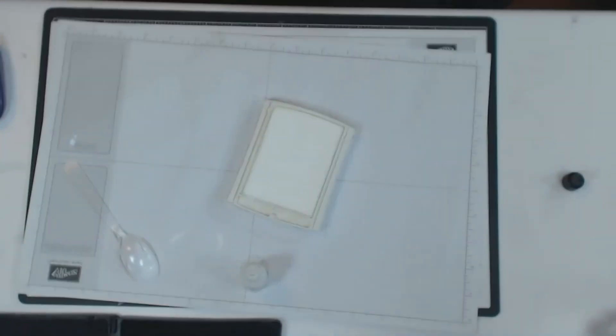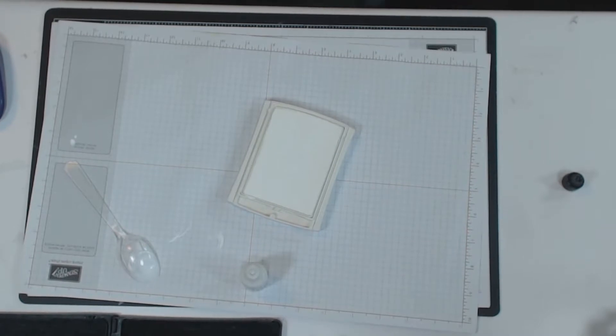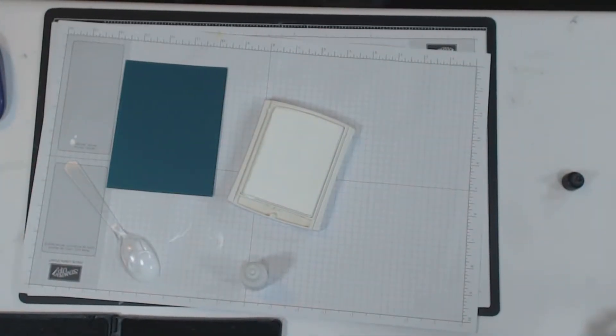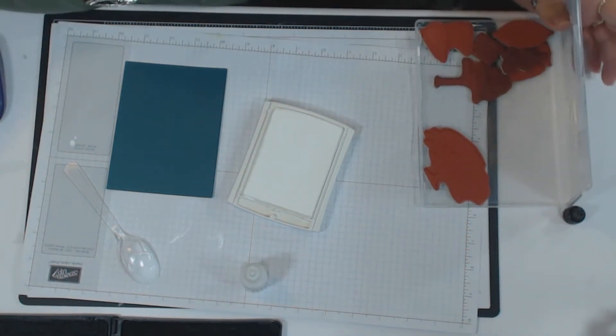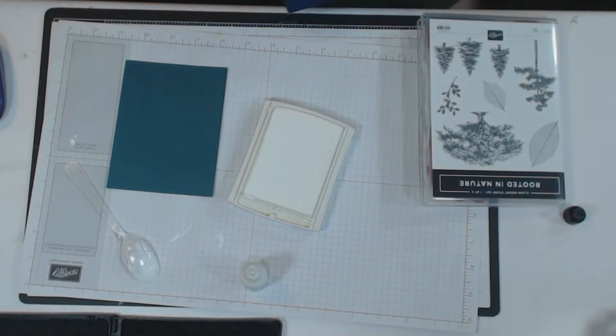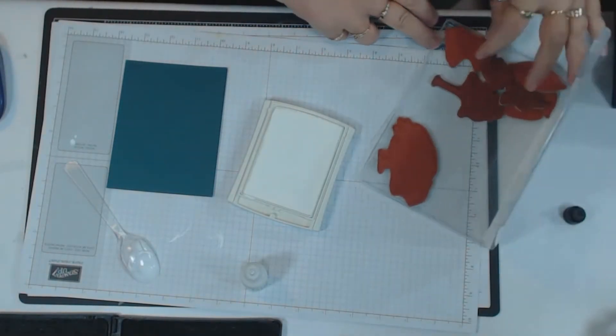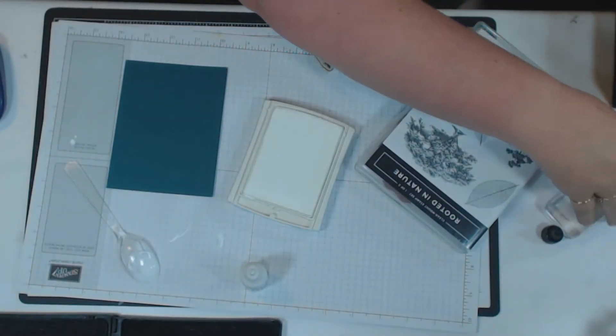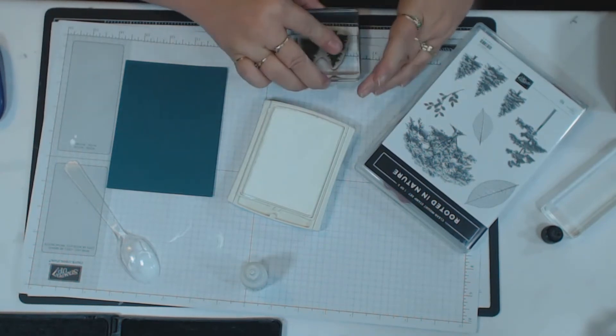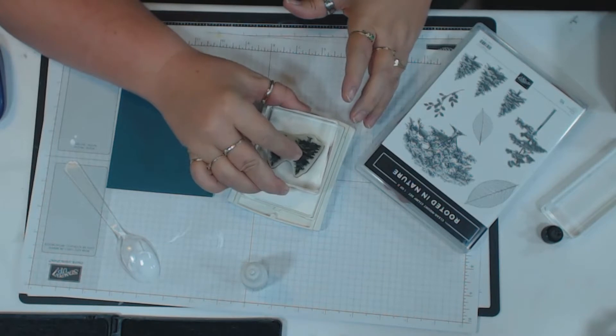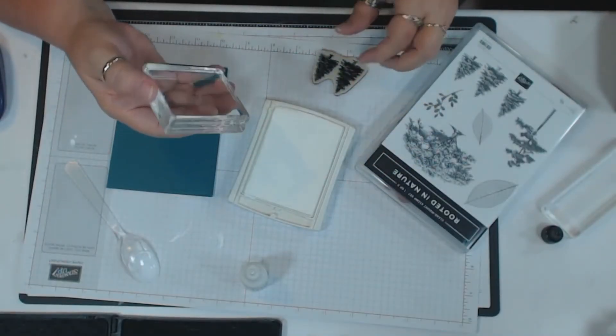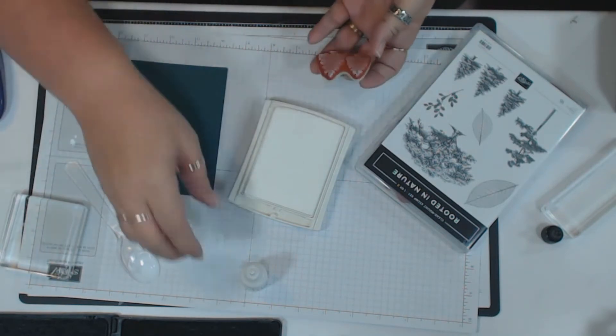Then what you're gonna do is take a piece of cardstock. Let's try one of these threes in here and see how it goes. So then you're just gonna stamp on it. I don't think—see, there's not really a whole lot of ink on there, so I'm gonna do a little bit more.